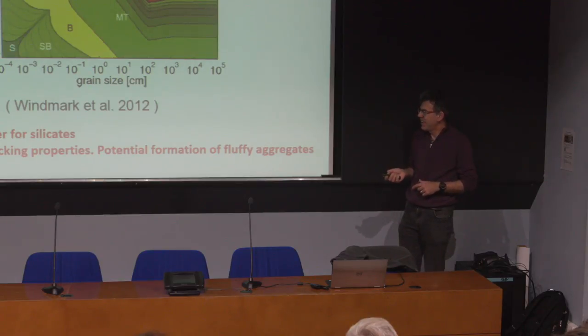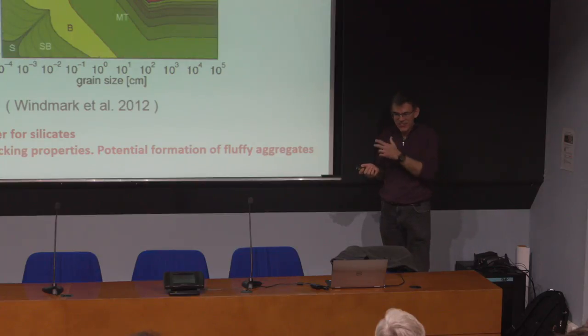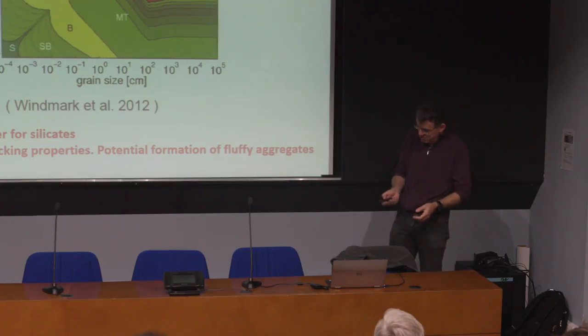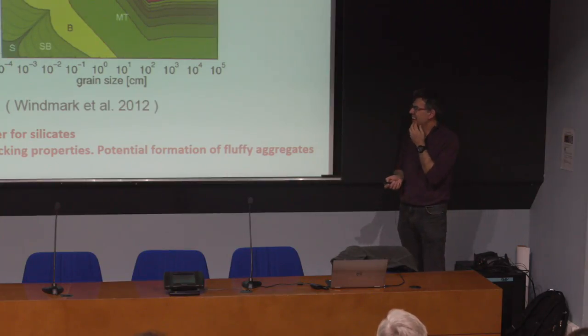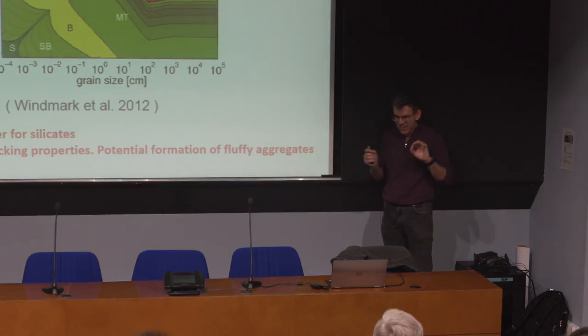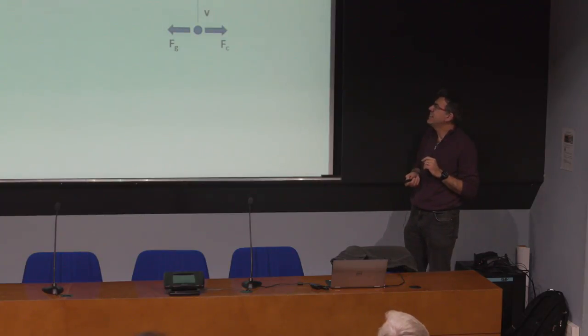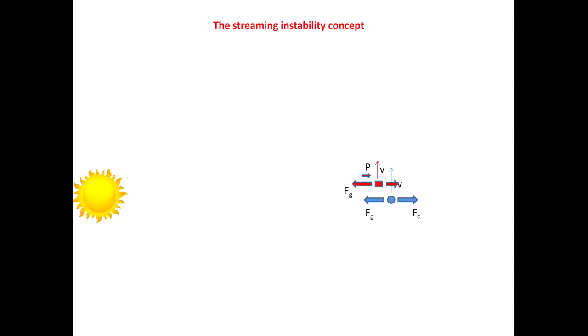For decades the community has been stuck on how to build big things beyond millimeter size, which was quite embarrassing because we know planetesimals — asteroids and comets — exist today, and from them planets must form. The situation is now improving. There is a new class of models that are very promising though not fully complete, and they offer a hint of how big things form. The idea is the streaming instability.